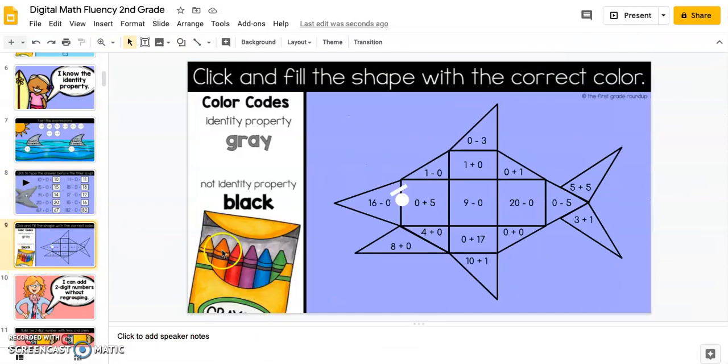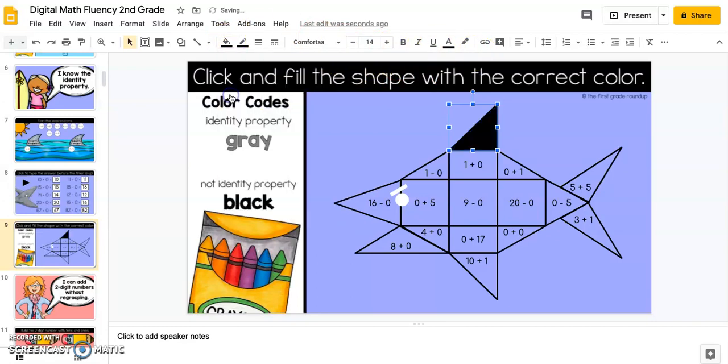There's also a click and fill the shape activity. They're going to follow the code. This one's not the identity property, so that is going to get colored black.